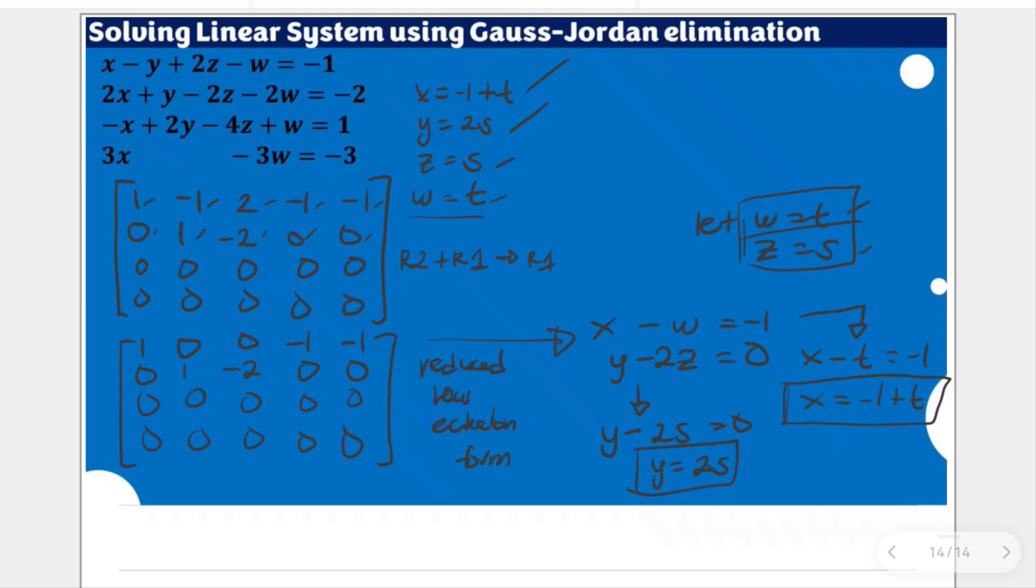Because if we are going to change w as s and z as t here, of course we'll be having different variables for x and y. But since we use that, we have the same values. And again, this means there are infinitely many solutions for this linear system. Thank you for watching.